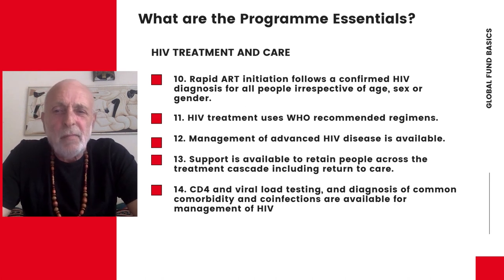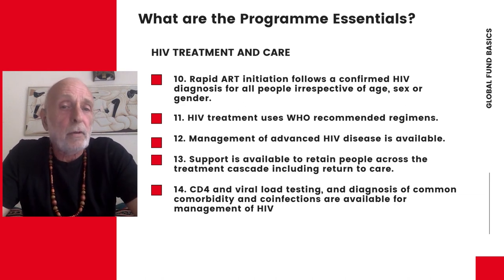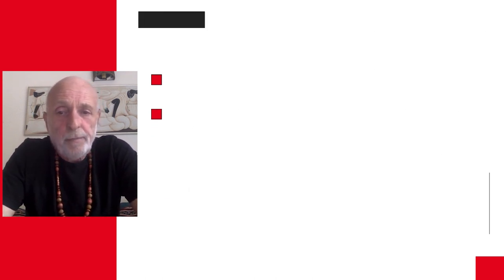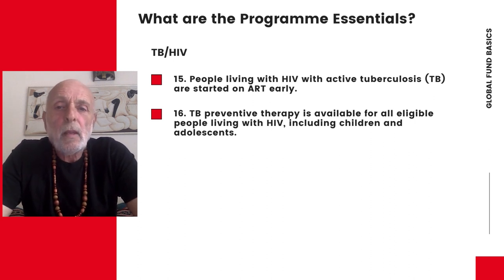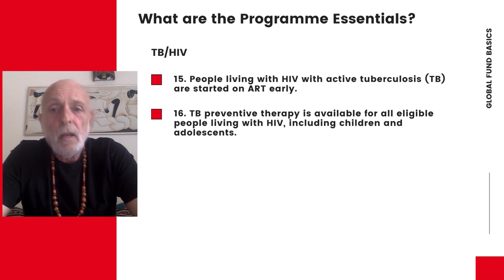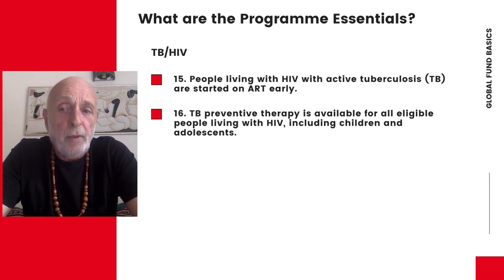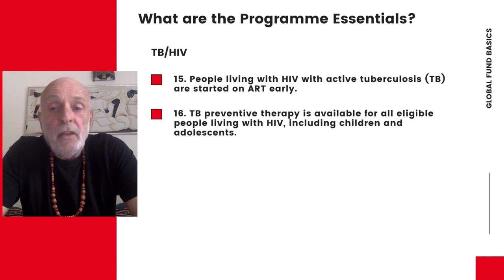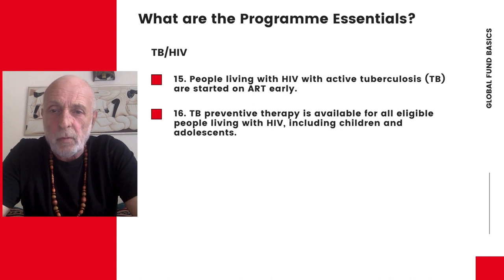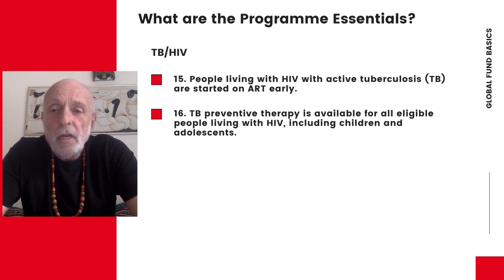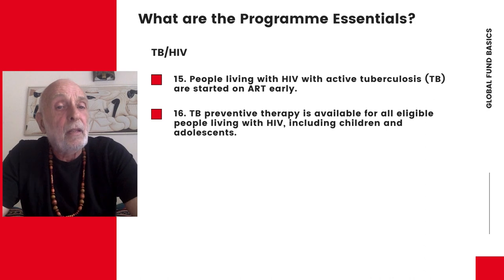These are pretty much aimed at hospital-based treatment services, but of course they should all be available to sex workers without prejudice. Then there's TB-HIV, with two program essentials. People living with HIV with active tuberculosis are started on antiretrovirals early. And TB preventive therapy is available for all eligible people living with HIV, including children and adolescents. As TB is one of the major killers of people living with HIV, these services should be available for sex workers. Monitoring availability and sex worker access is important, and if there are issues, these should be brought to the attention of the principal recipient, the CCM, and the Fund Portfolio Managers.